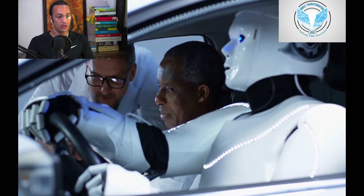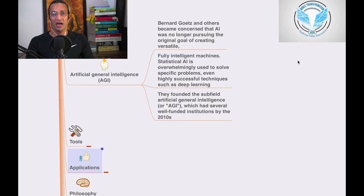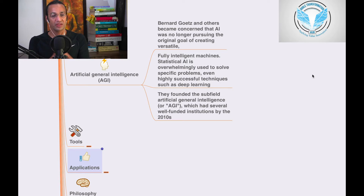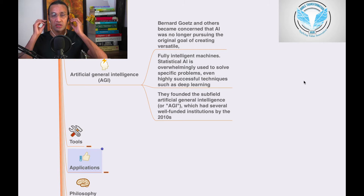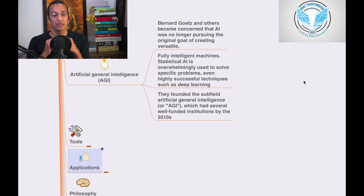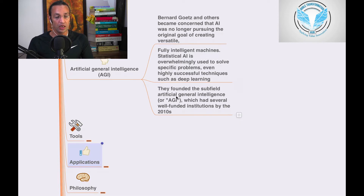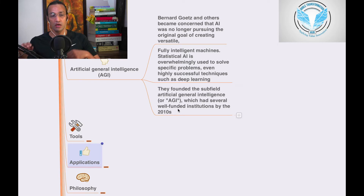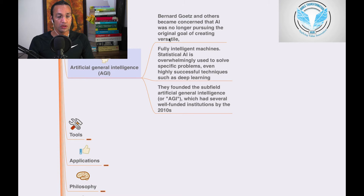We'll go to the section on Artificial General Intelligence — AGI. Researchers became concerned that AI was no longer pursuing the original goal of creating a versatile, fully intelligent machine. Statistical AI was overwhelmingly being used to solve specific problems. Even highly successful techniques such as deep learning were subfields. Artificial General Intelligence had several well-funded institutions by 2010. This is a brief description of Artificial General Intelligence, and we'll go through all the concepts and connect all the dots together.